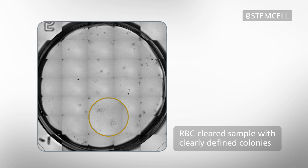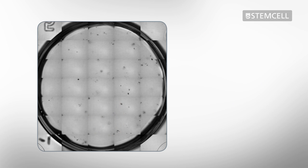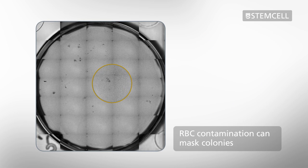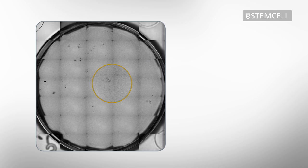Some colonies may be masked or obscured by the contaminating red blood cells and may be missed during counts. Another issue is that areas of dense RBC accumulation could be mistaken as colonies, resulting in false positives.